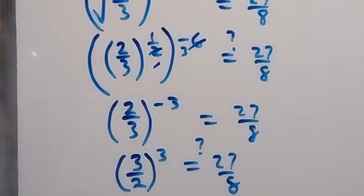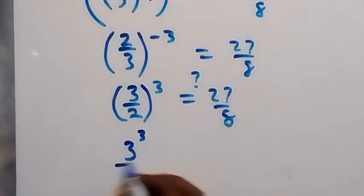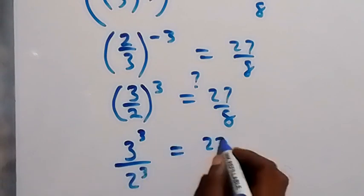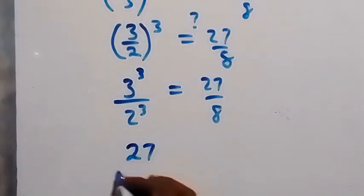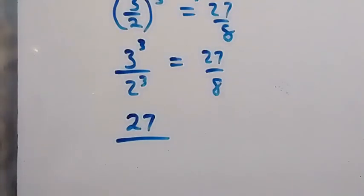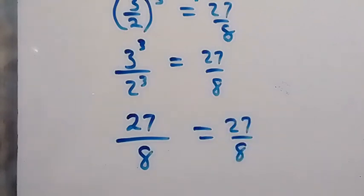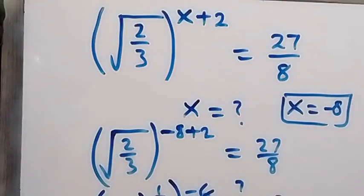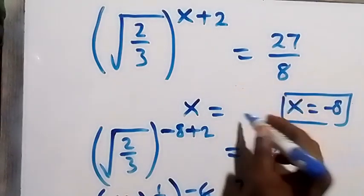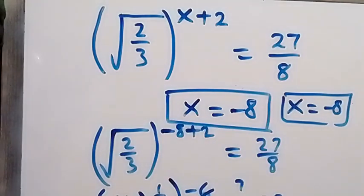The power of 3 affects all numbers inside the bracket — that's 3 raised to power 3 over 2 raised to power 3, which equals 27 over 8. Indeed, 3 raised to power 3 is 3 times 3 times 3 equals 27, and 2 raised to power 3 is 2 times 2 times 2 equals 8. So 27 over 8 equals 27 over 8. The left-hand side equals the right-hand side, confirming x equals minus 8.